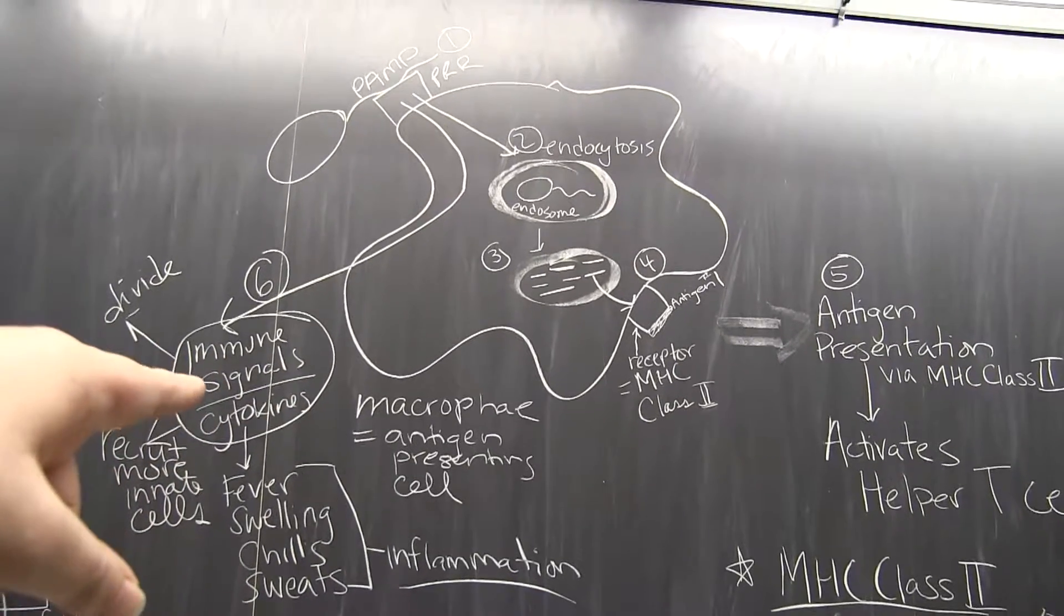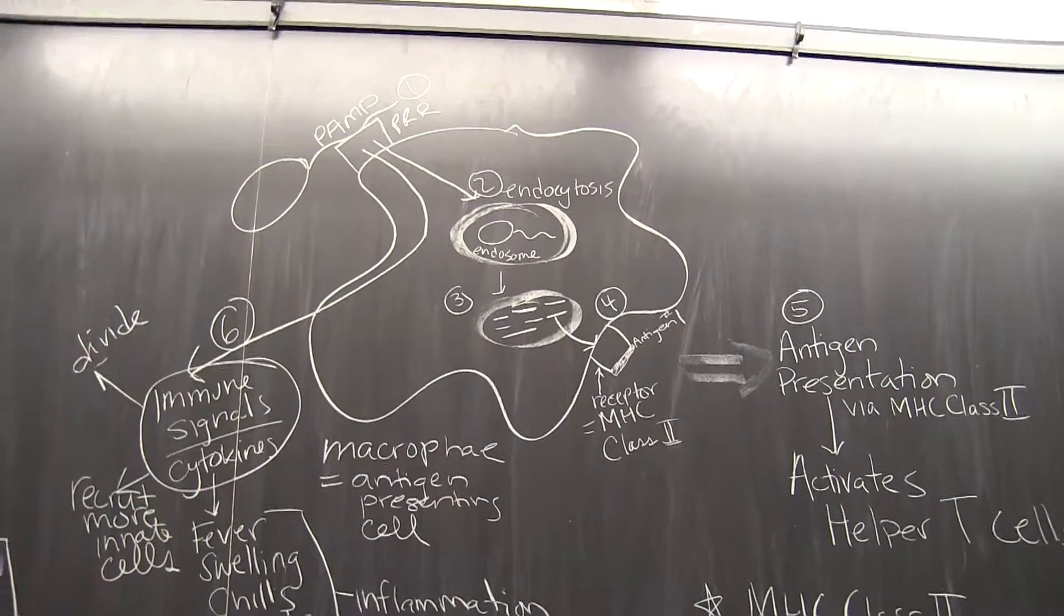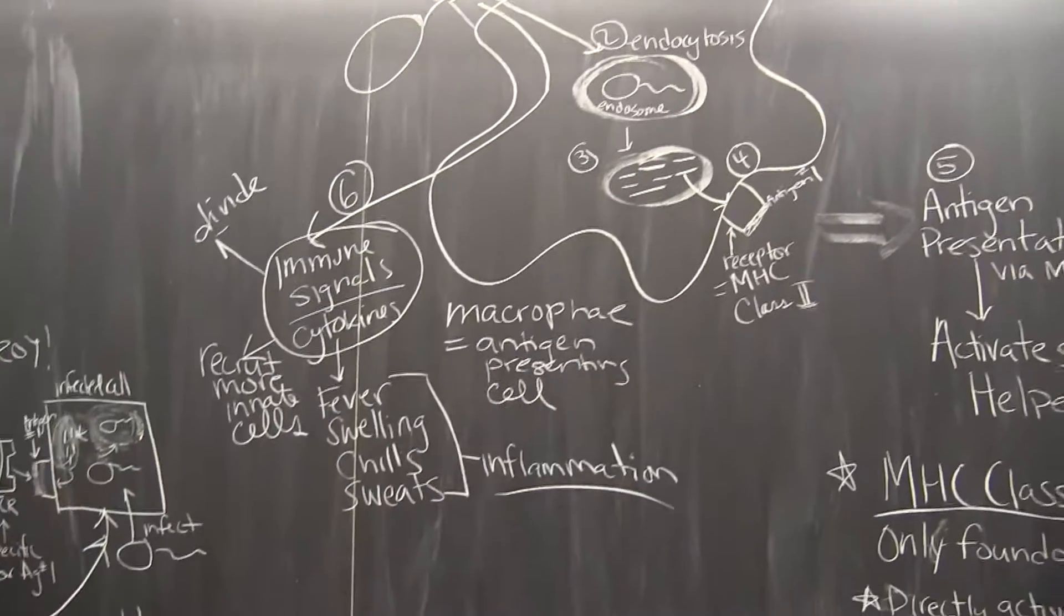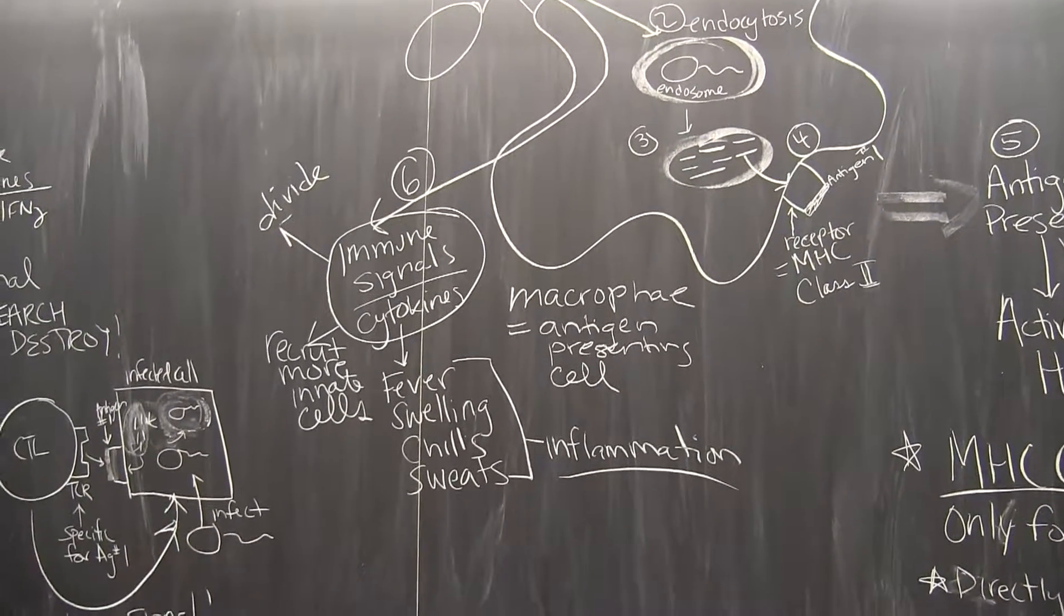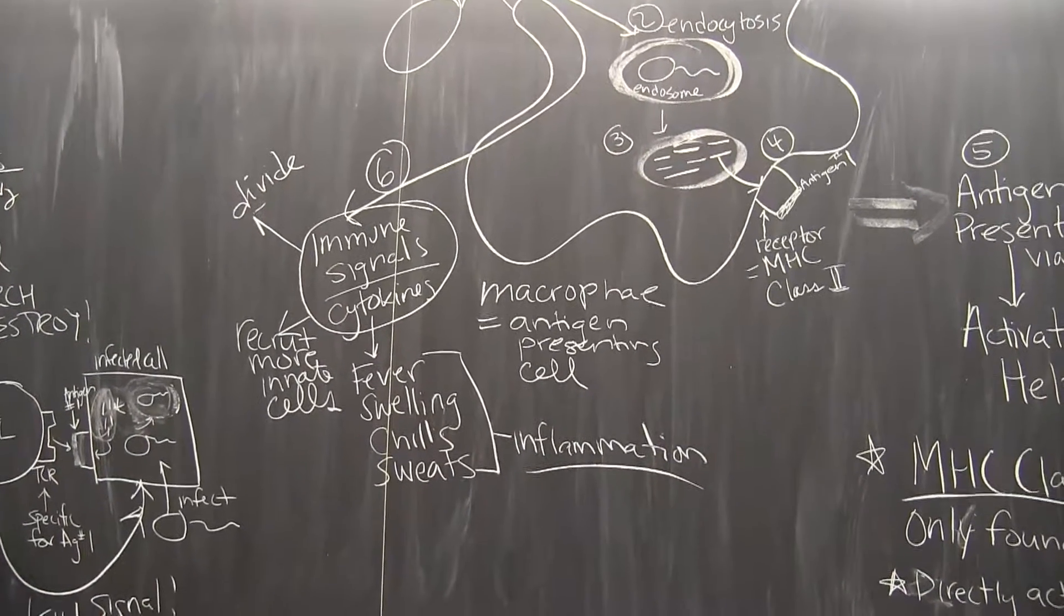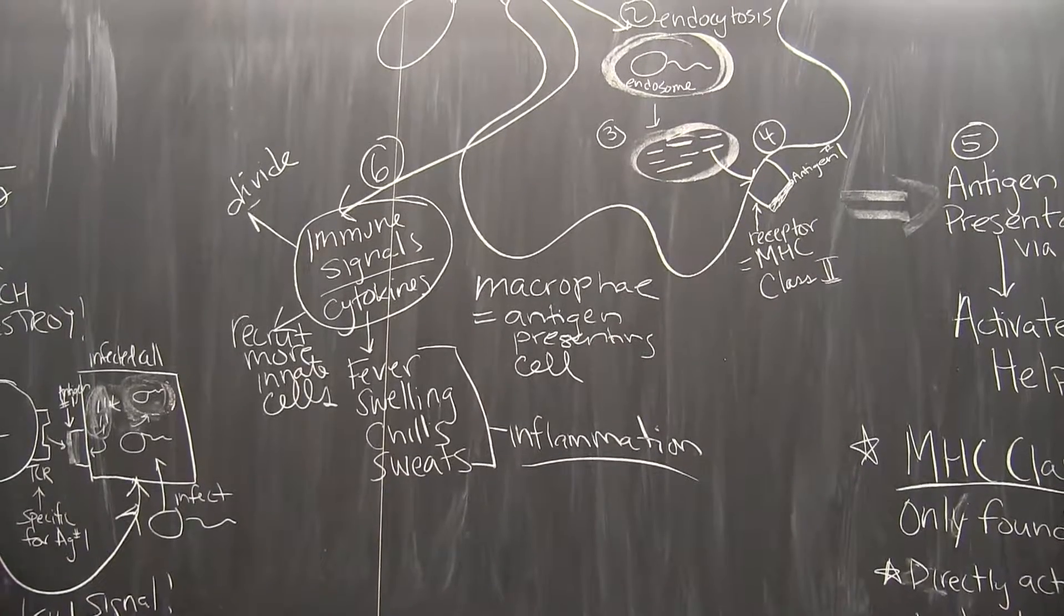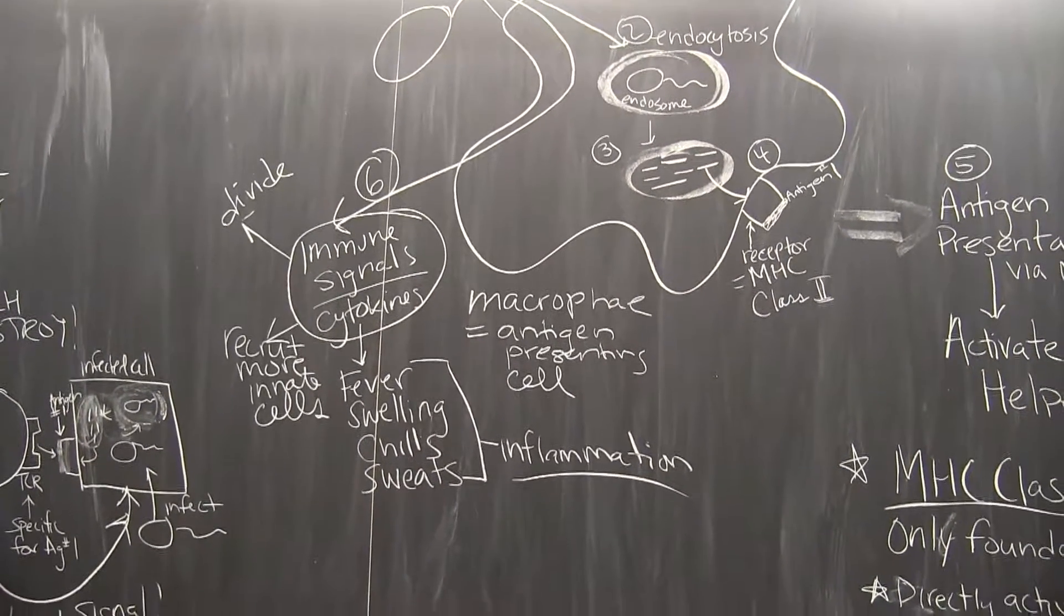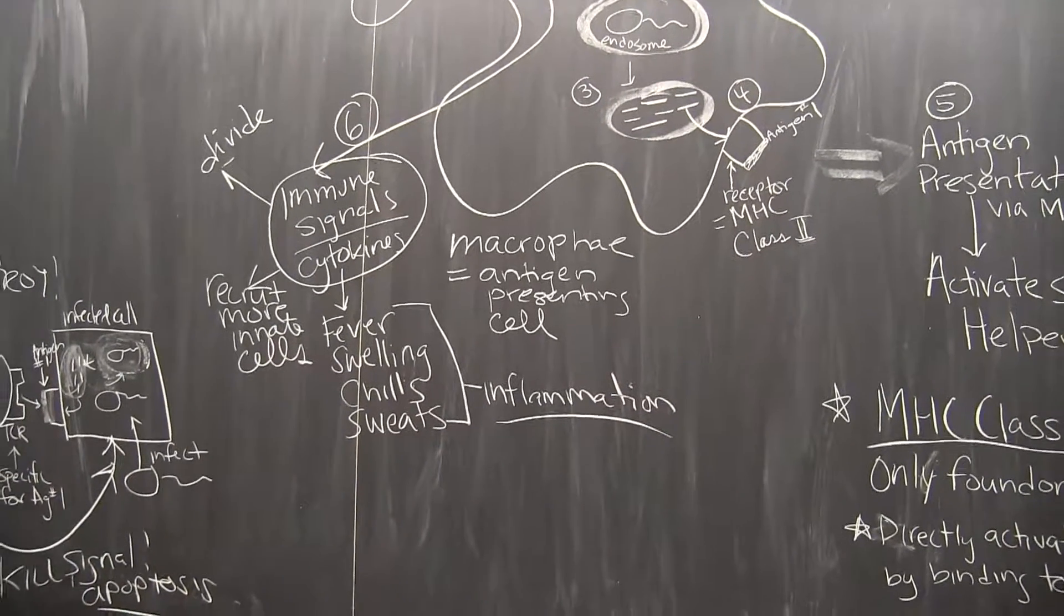And one is that this macrophage and other APCs are going to produce immune signals. And these immune signals are called cytokines. And they do lots of different things. They tell the macrophage to divide, the immune signals help to recruit more innate immune cells, more macrophages, DCs. It also can travel up to the brain and have physiological impacts like causing fever,